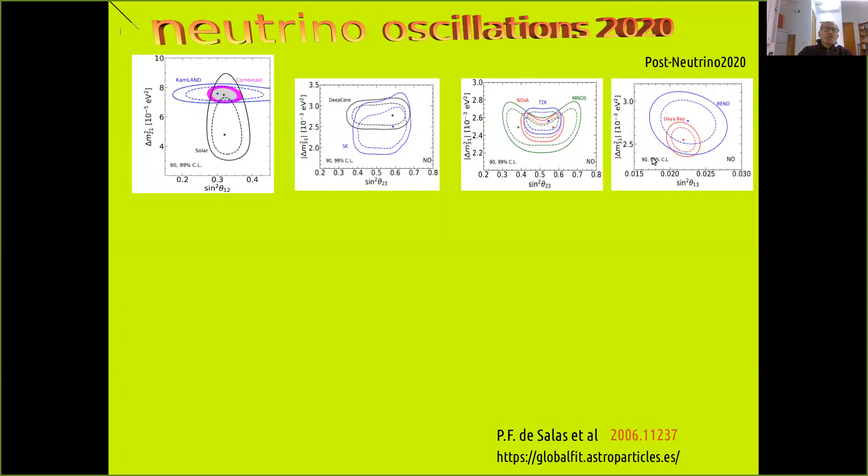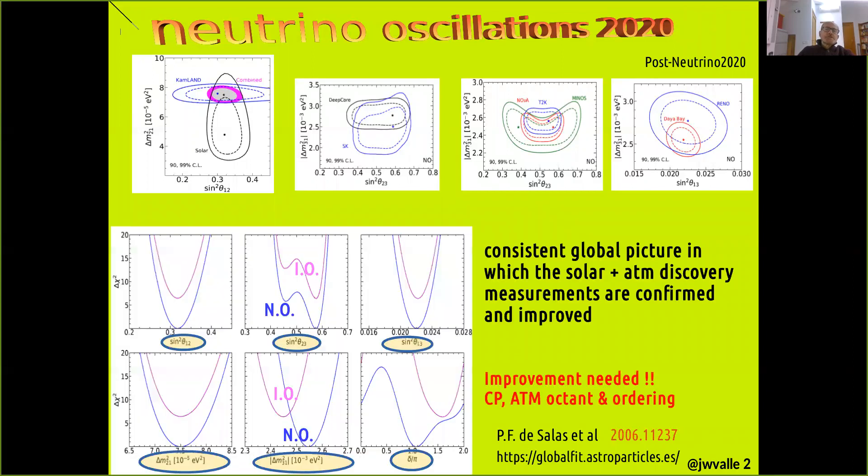All together these parameters, these experiments find a convergent and consistent global interpretation in terms of neutrino oscillations, the so-called three neutrino paradigm, in which the two mass splittings are very well determined, as you see down here. Then the one-two and one-three mixing angles are also very well determined.